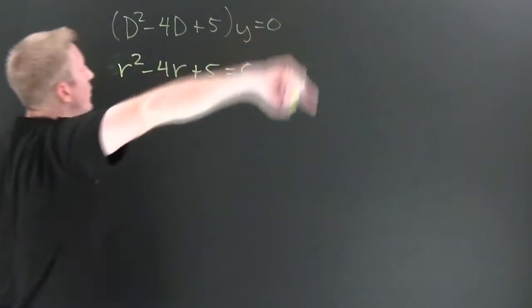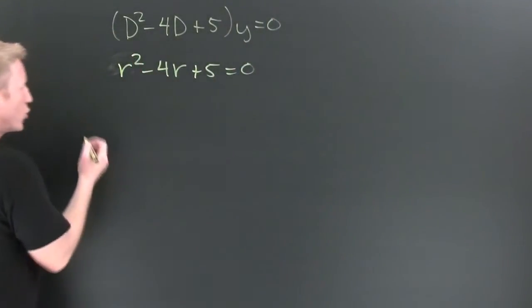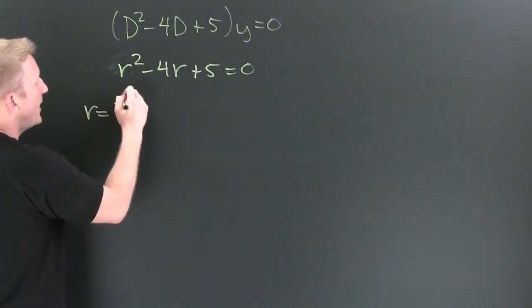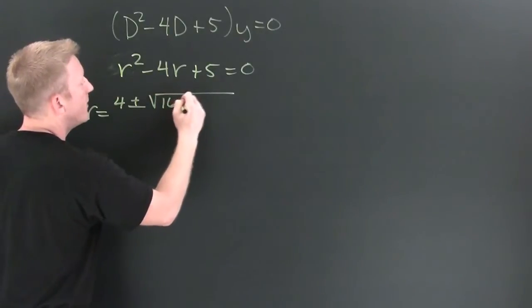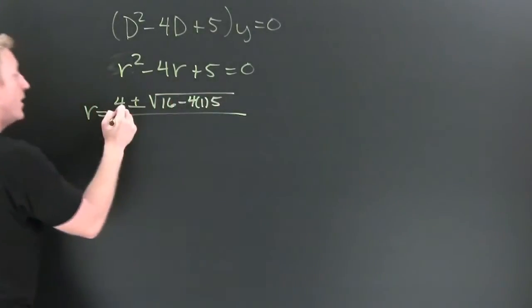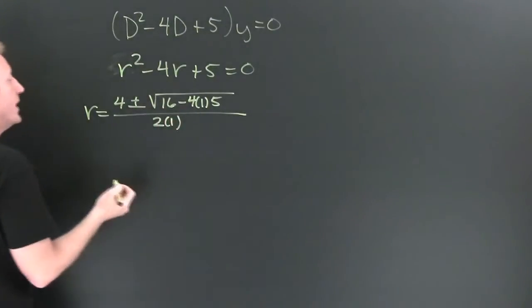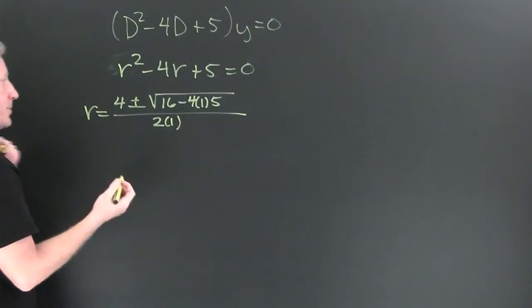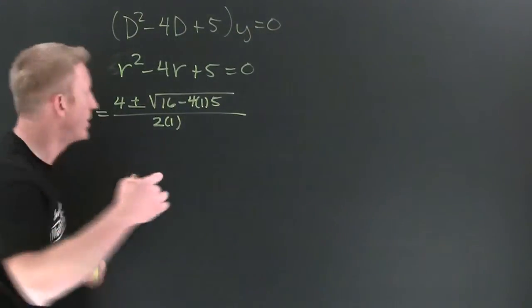It doesn't factor, so we can go all quadratic on it. r is equal to minus b plus and minus square root b squared minus 4ac all over 2a.